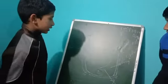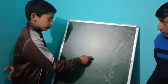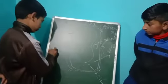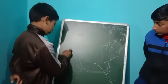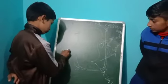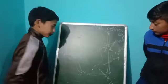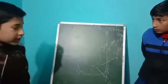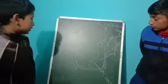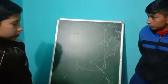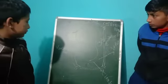Inside the plant cell there is a vacuole. The blank space in the plant cell is called a vacuole.